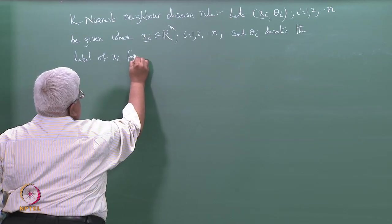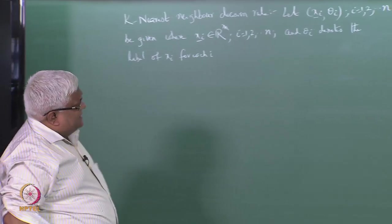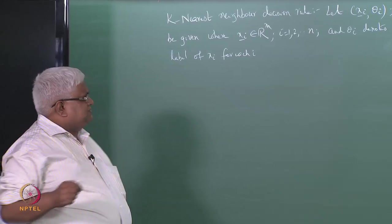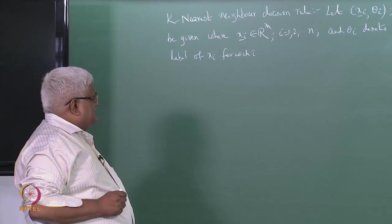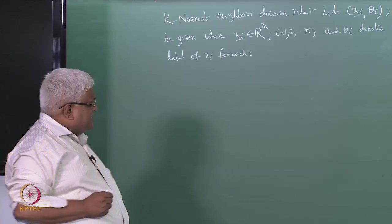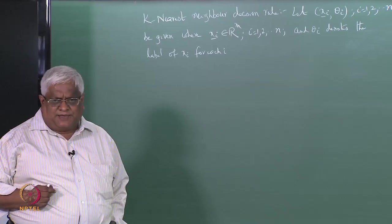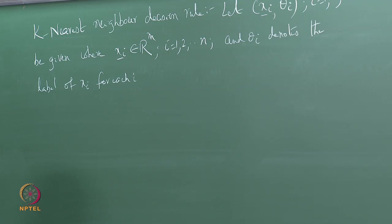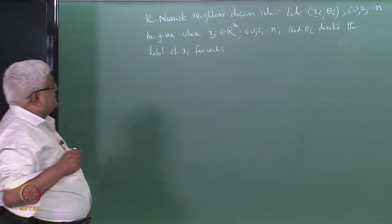By the K-nearest-neighbor rule, we are given xi, theta i for i equal to 1 to n. The xi's are points belonging to m-dimensional Euclidean space. Theta i denotes the label of xi for each i — the class from which the observation xi has come.